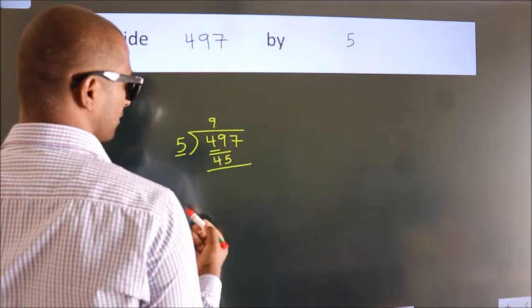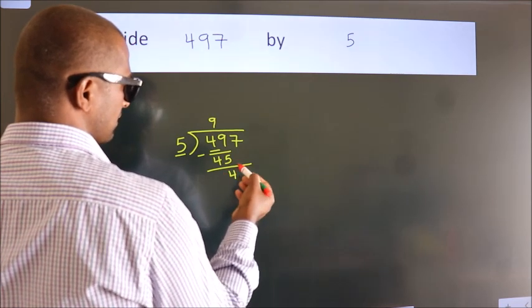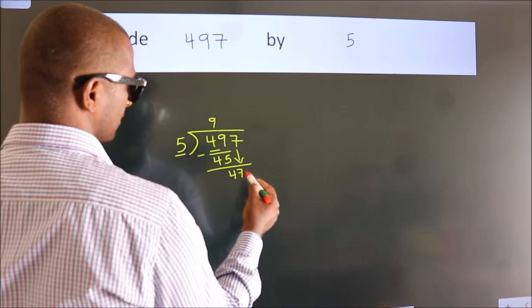Now we should subtract. We get 4. After this, bring down the beside number. So 7 down. So 47.